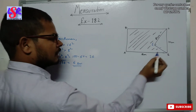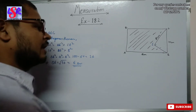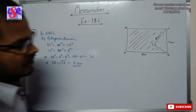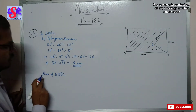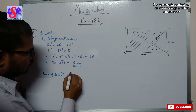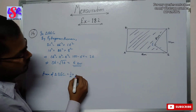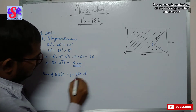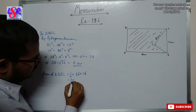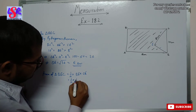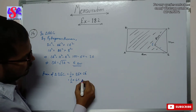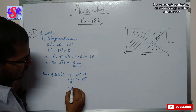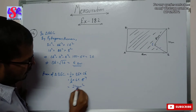We have found the length BE as 6 centimeters. With this we can calculate the area of triangle BEC. Area of triangle BEC equals 1/2 into base BE into height CE, which is 1/2 into 6 into 8. Simplifying, 2 cancels into 8 to give 4, so 6 into 4 equals 24 square centimeters.